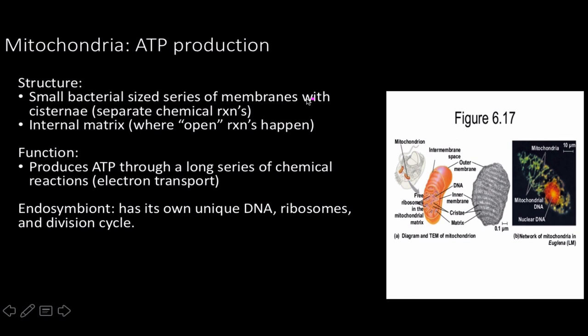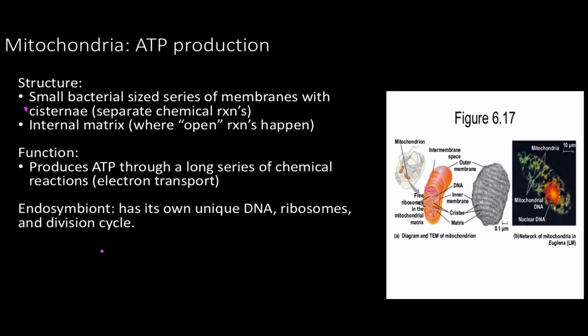Next is the mitochondria, which functions in ATP production. It's a small bacterial-sized series of membranes with cisternae and contains an internal matrix. The cisternae are the infoldings, and the open part is the mitochondrial matrix — where cyclic reactions like the Krebs cycle take place. Its functional role is producing ATP through a long series of chemical reactions, ultimately an electron transport chain. It's an endosymbiont with its own unique circular DNA, ribosomes, and its own division cycle independent of the cell. Mitochondria are not part of the endomembrane system because they did not come from those membrane infoldings — they are former bacteria.